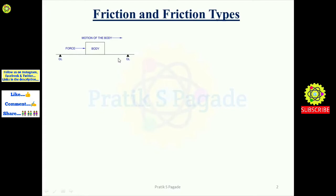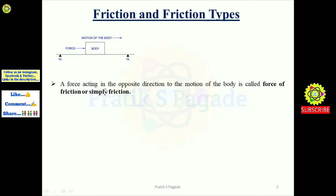This opposite force produced by the surface roughness is called the force of friction, or simply frictional force. A force acting in the opposite direction to the motion of the body is called force of friction. As seen in the diagram, the body moves rightward and the force of friction, due to surface roughness, acts in the opposite direction, retarding the motion of the body.